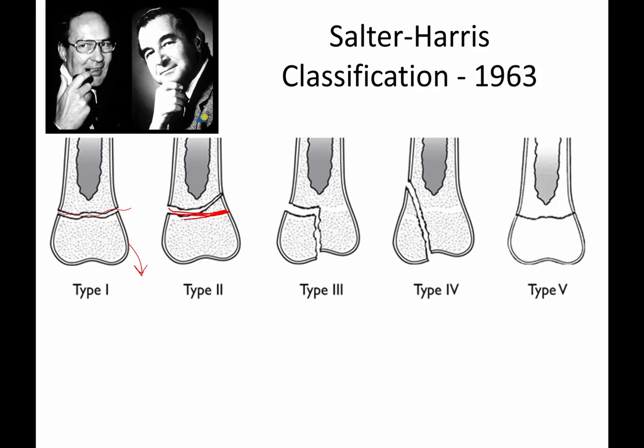A Salter-Harris type 2 fracture goes into the growth plate and then exits up into the metaphysis. A type 3 fracture goes along the growth plate and then exits into the epiphysis.